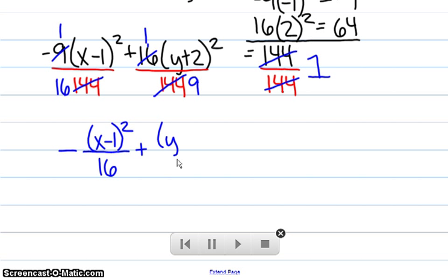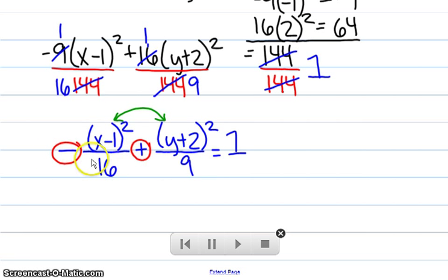Right now, we have negative of (x minus 1) squared over 16 plus (y plus 2) squared over 9 equal to 1. Now, if you look at these signs, this does not look like a hyperbola. I've got these signs mixed up. I've got to switch them. Because the signs go with the terms, I have to switch the whole term here with the whole term here.